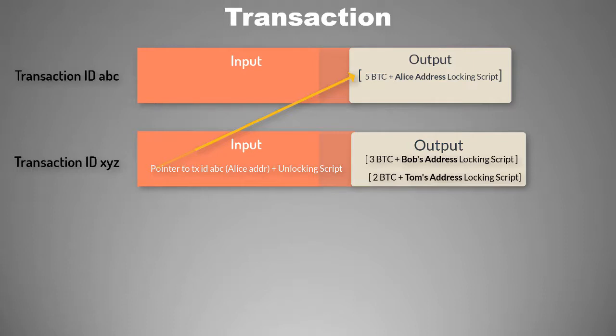So in this example Alice had five Bitcoins, which means there was already a transaction output with Alice's address and a value of five Bitcoin. The transaction input was just pointing to this output, telling the Bitcoin system that it is spending Alice's five Bitcoin. Ultimately this transaction created two new outputs: one with Bob's address with three Bitcoins and another with Tom's address with two Bitcoins.